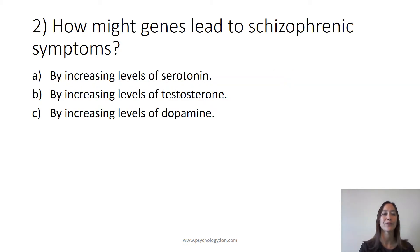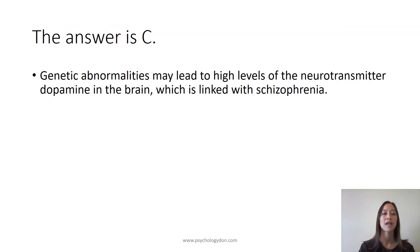Question 2: How might genes lead to schizophrenic symptoms? The answer is C. Genetic abnormalities may lead to high levels of the neurotransmitter dopamine in the brain, which is linked to schizophrenia.